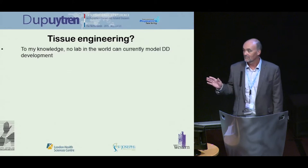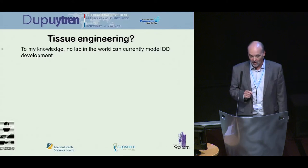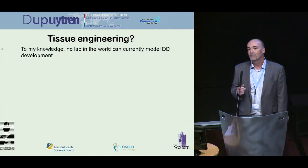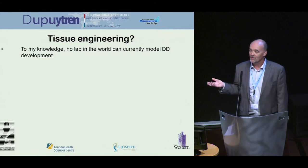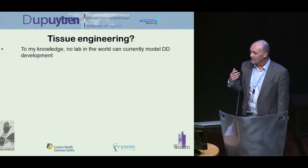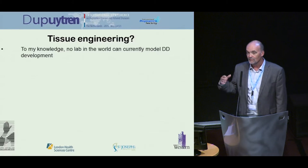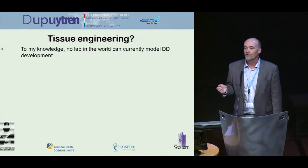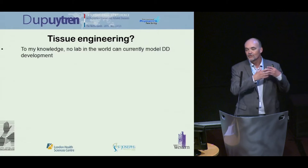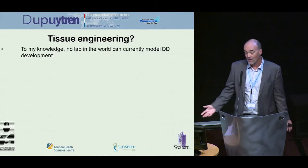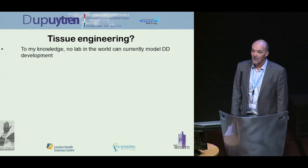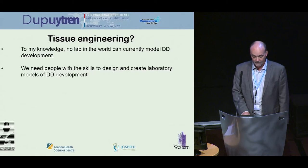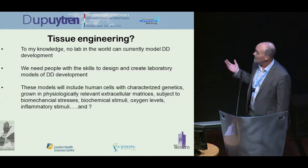To my knowledge, there is no lab in the world — please contradict me if I'm wrong — that currently models Dupuytren's disease development in a lab. I actually put in a grant last year which was unsuccessful, and one of the reviewers told me: 'Dr. O'Gorman, this is a lovely grant with great data, but all you have are windows in time. You have not shown us a model in your laboratory that shows the development of disease over time.' And they were right.